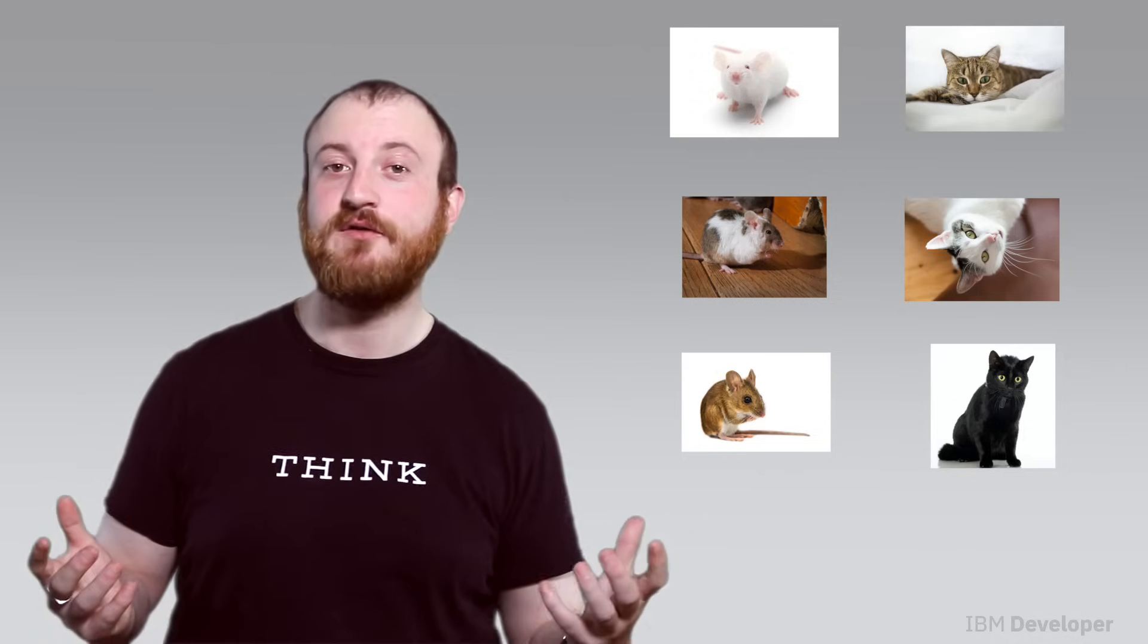So, even though it wouldn't explicitly know that one thing is a cat or a mouse, it would still be able to say, I think it's this thing or that thing.